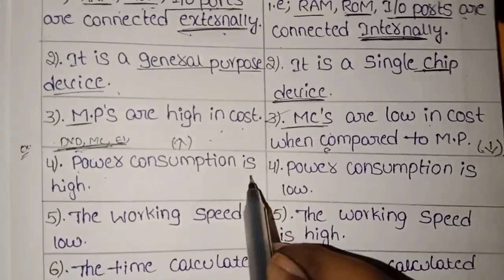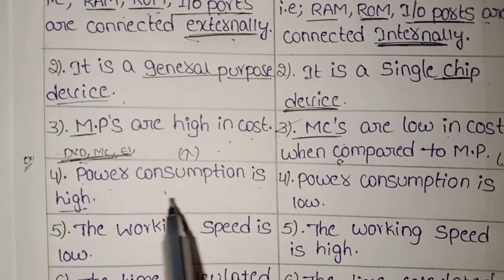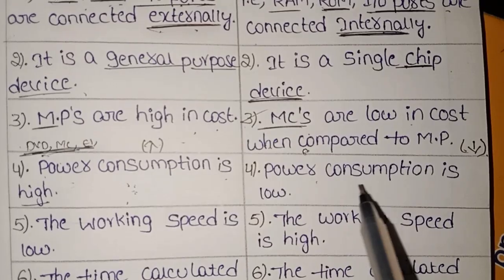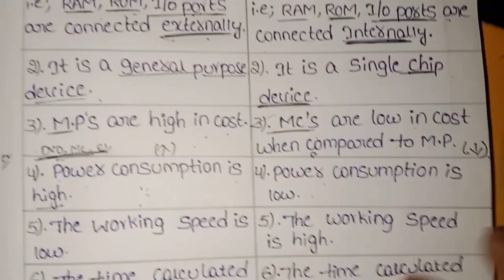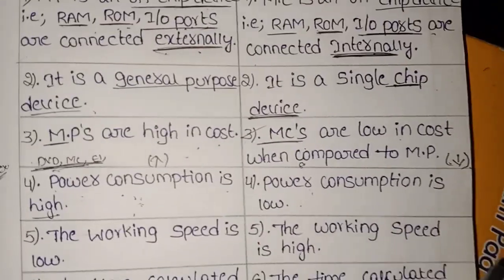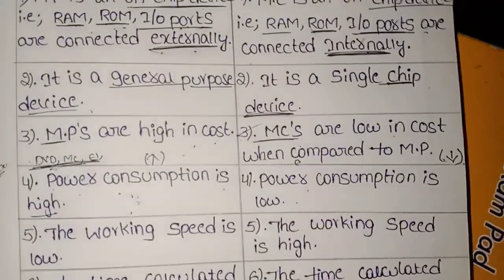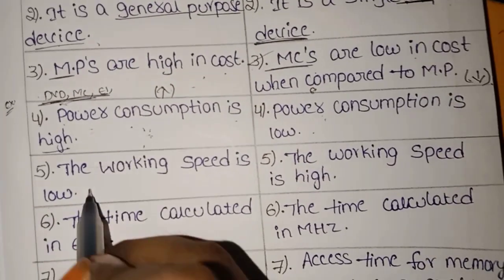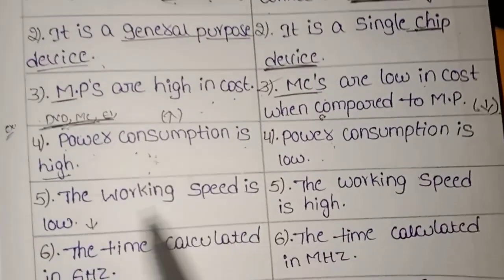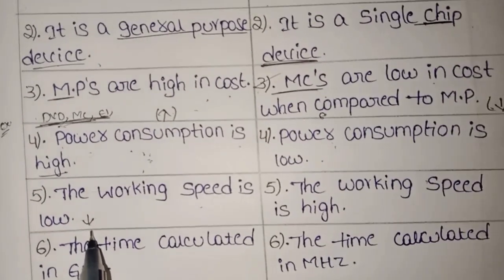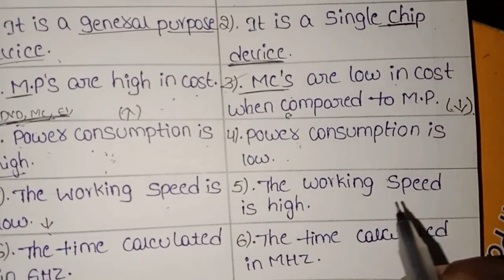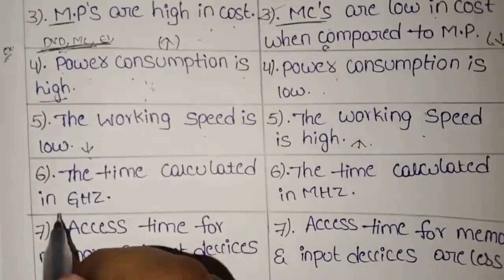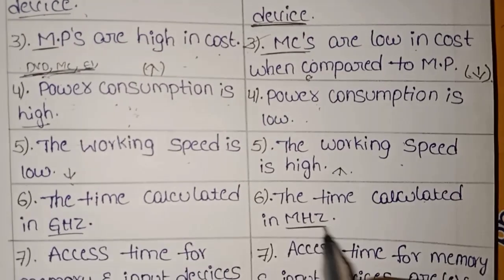Power consumption is high for microprocessors. The working speed of a microprocessor is higher than that of a microcontroller. Microprocessor speed is calculated in GigaHertz, while microcontroller speed is calculated in MegaHertz.